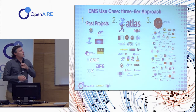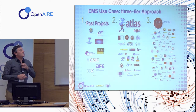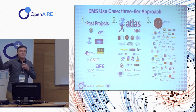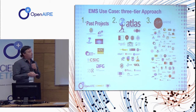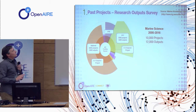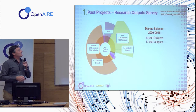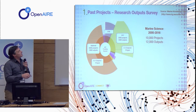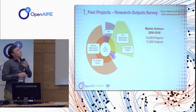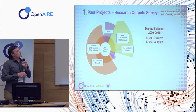The third approach is to use a network of institutions in marine science — it's a bit larger, 60 institutions — and that approach is mainly to broaden awareness in the community. For the first approach, here is a result: a survey done by the Marine Knowledge Gate which surveyed marine science projects — about 10,000 projects and 12,000 outputs in 2016.